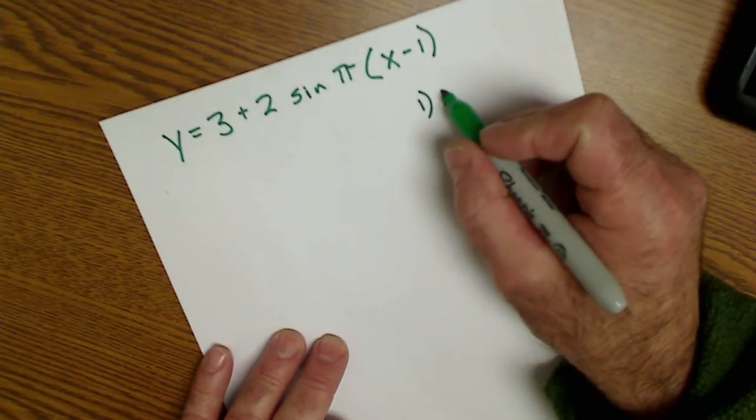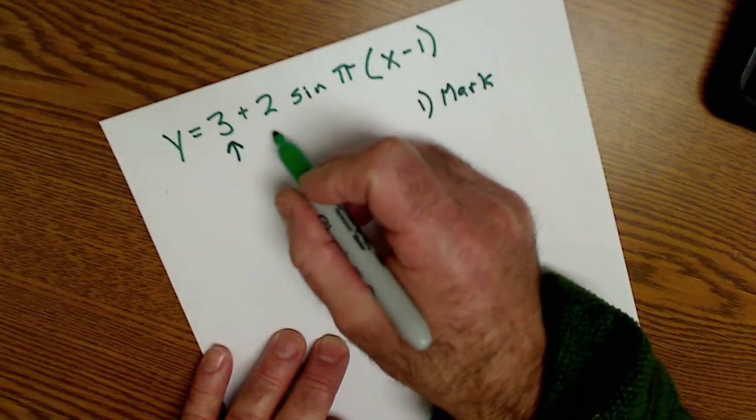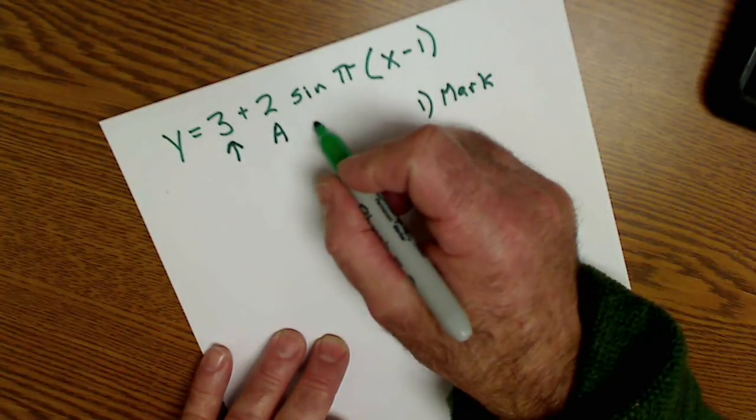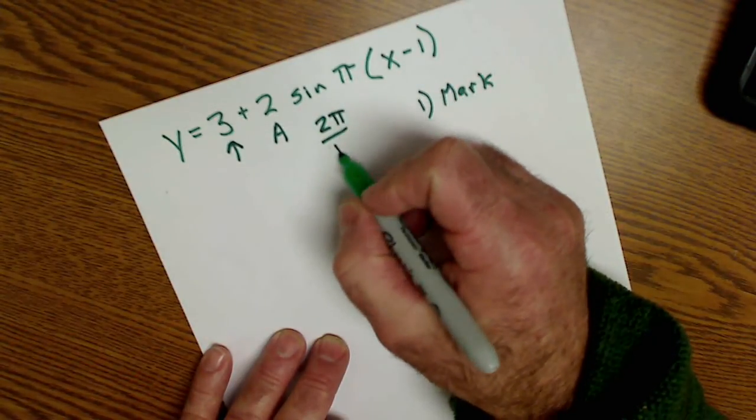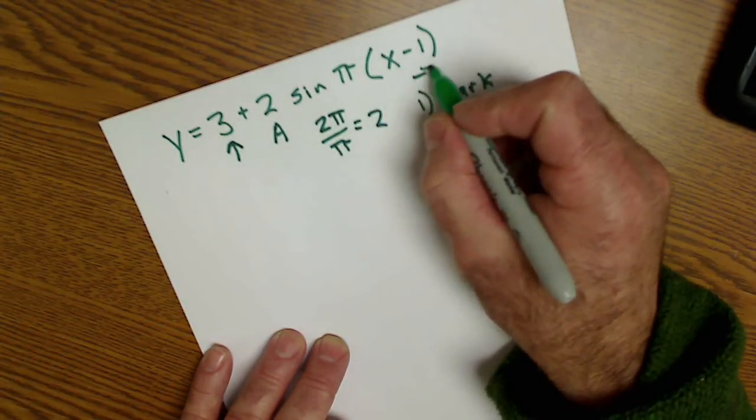Step one, mark up the equation. This is a vertical shift. This is an amplitude. This is not my period, but it gives me my period. 2π divided by this b value is my period of 2, and this is a phase shift.